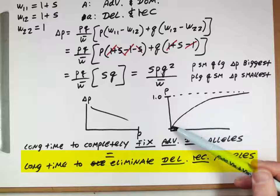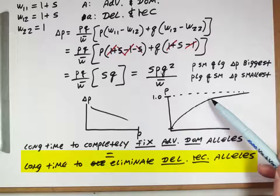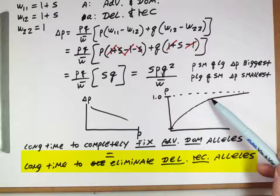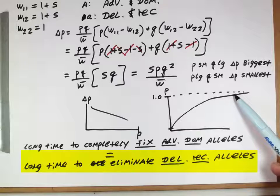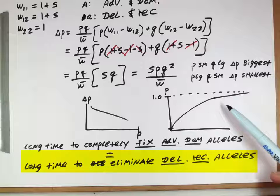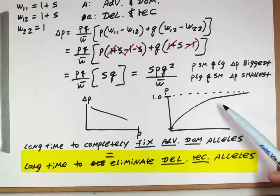Natural selection does a pretty good job of selecting for advantageous alleles and getting the population to a state where most individuals have those advantageous alleles. But it does not do a very good job of eliminating the last few deleterious recessive alleles from a population that has them.